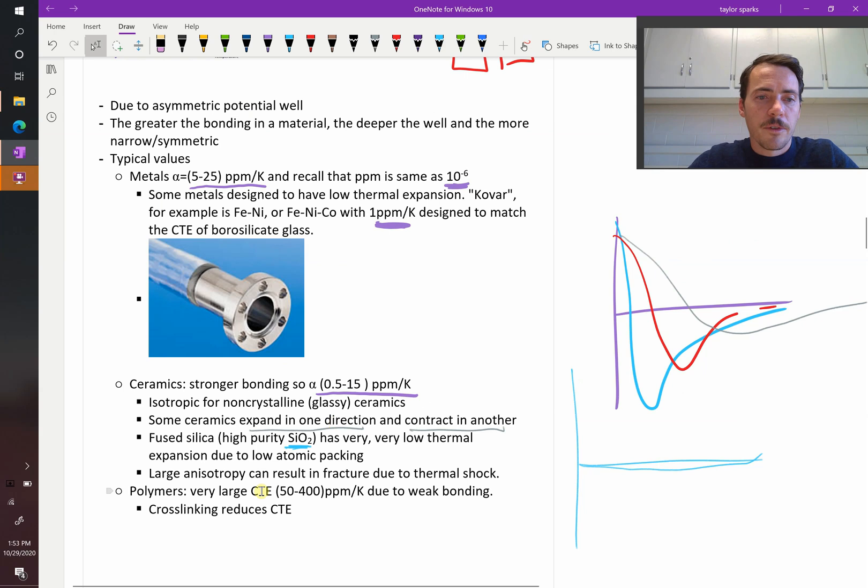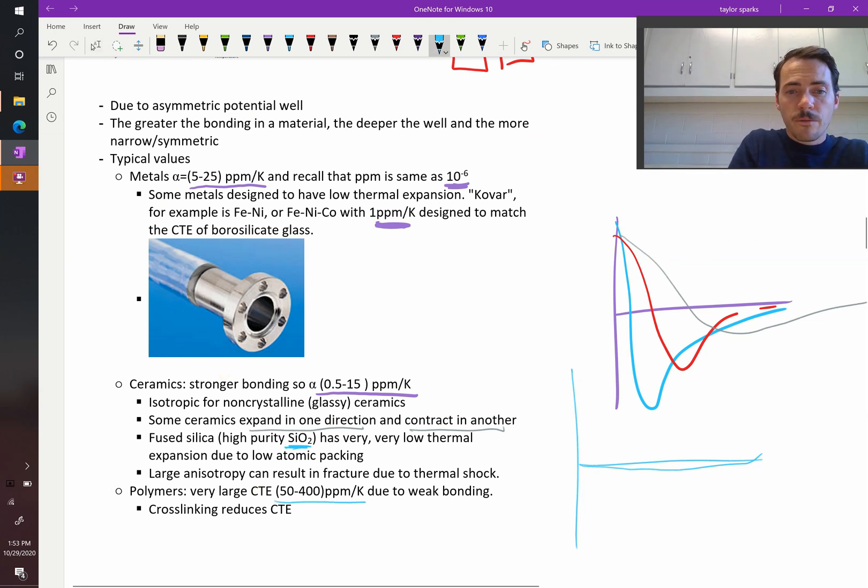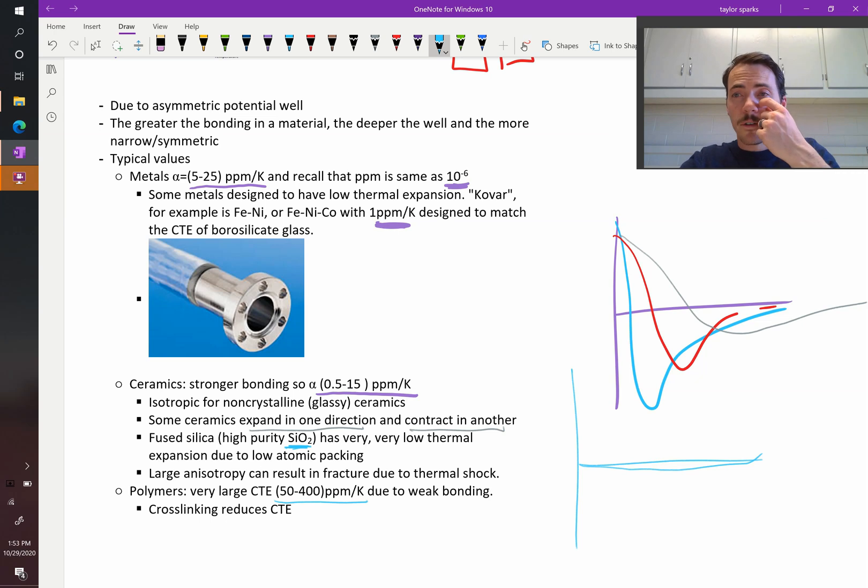And then polymers, the last thing about polymers is that the thermal expansion can be quite large. We're talking about 50 to 400 parts per million per K, and this is just because they're so weakly bound. It's that inter chain bonding is really easy to cause separations in those weak bonds. And then if you cross-link your ceramic, like a rubber that's been crossing, vulcanized rubber, then you typically reduce the coefficient of thermal expansion.